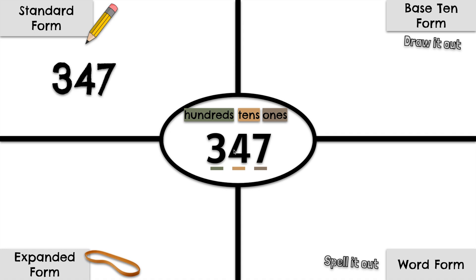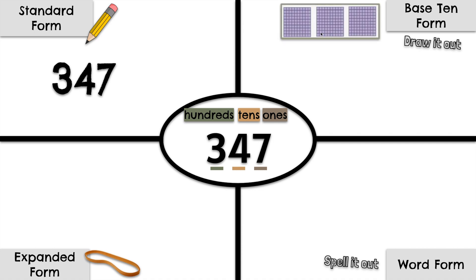Now let's show 347 in base 10 form. We need 3 hundreds: 1, 2, 3. Let's count: 100, 200, 300. We need 4 tens: 1, 2, 3, 4. Let's count: 10, 20, 30, 40. The 4 is worth 40.